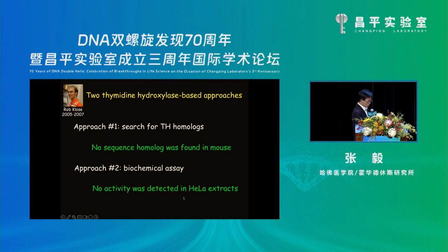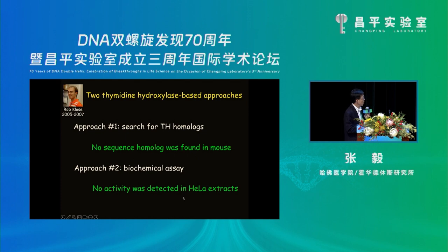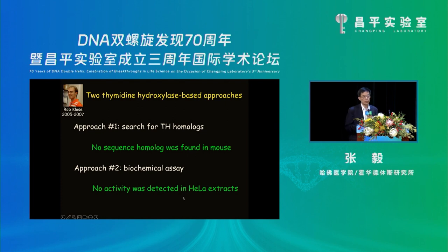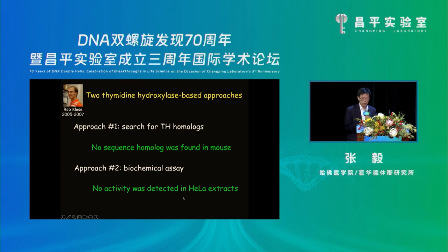Unfortunately, he ended up not finding the homolog, because when he used the fungi or parasite thymine hydroxylase in BLAST, there was no mammalian homolog. We also know that HeLa cells, which we used for protein extract, have very little or almost no expression of TET proteins. So he moved on and looked at some Jumongi proteins instead.